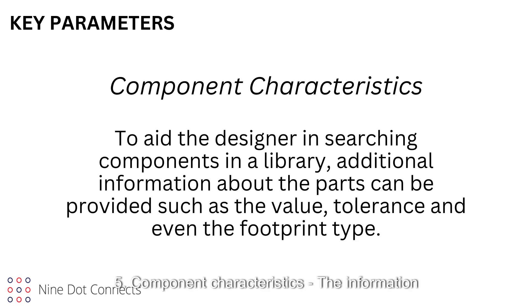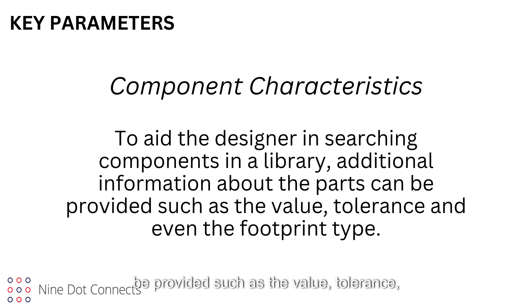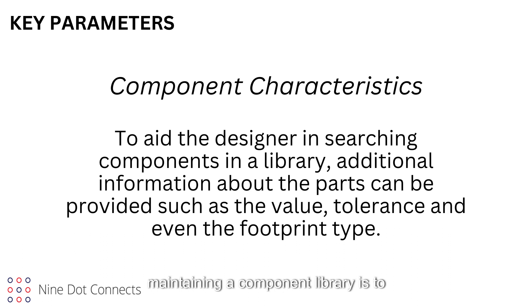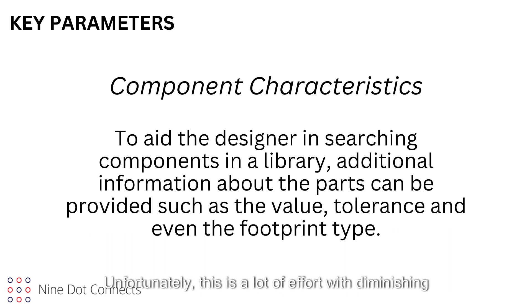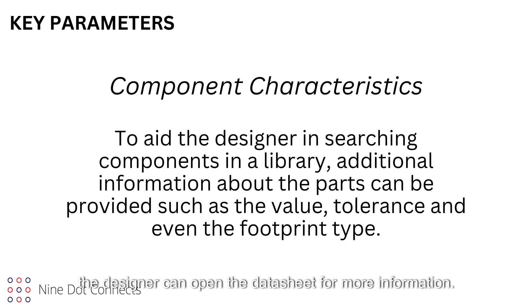5. Component characteristics — the information provided thus far is valuable for the bill of materials. To aid the designer in searching components in a library, additional information about the part can be provided, such as the value, tolerance, and even the footprint type. These characteristics should be limited to key features of the components. A common mistake by those who are maintaining a component library is to obtain all the parameters of a component type. Unfortunately, this is a lot of effort with diminishing returns. The key parameters of a component type are adequate for search purposes within the library. Once a component has been located, the designer can open the datasheet for more information.